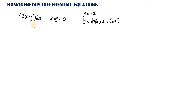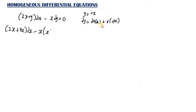Now let's substitute. Wherever we see y, replace it with v·s, and wherever we see dy, replace it with s·dv + v·ds. So this becomes (2s + vs)ds minus s(s·dv + v·ds) equals 0.